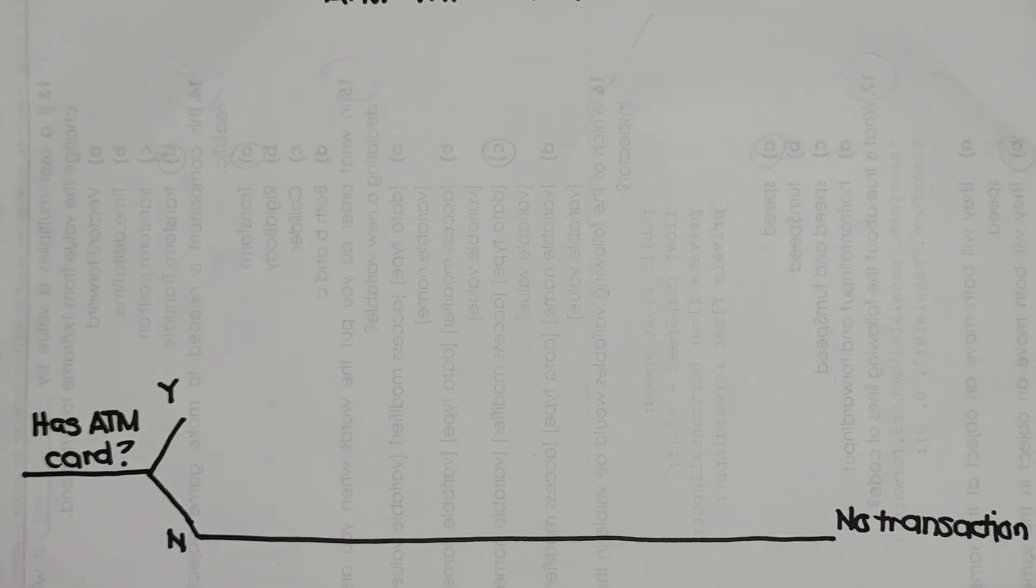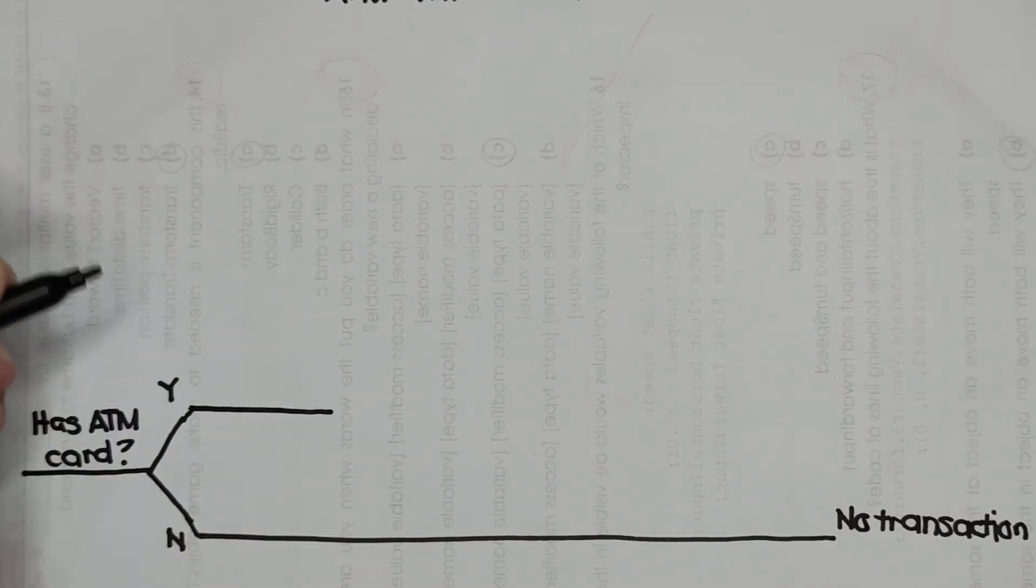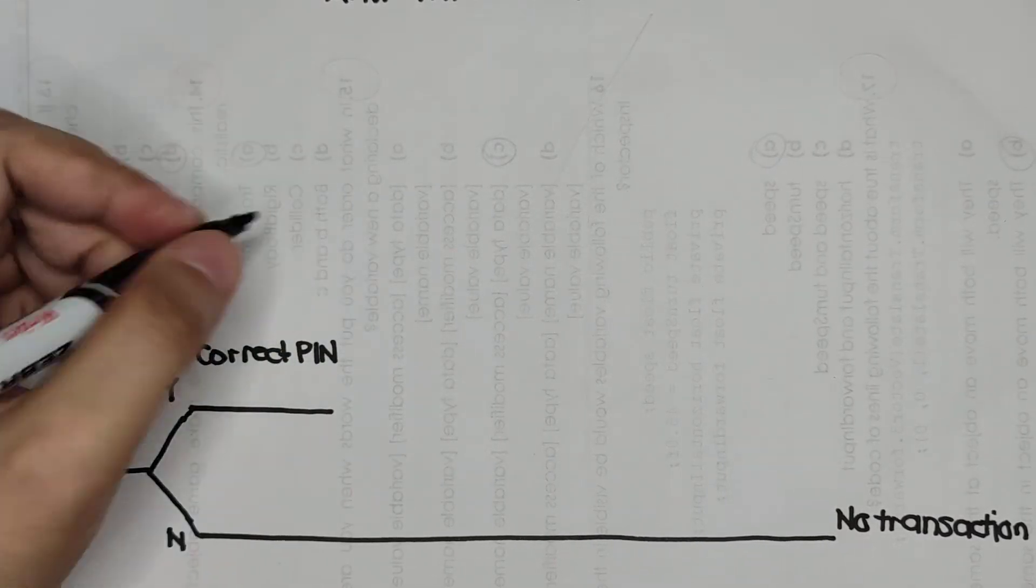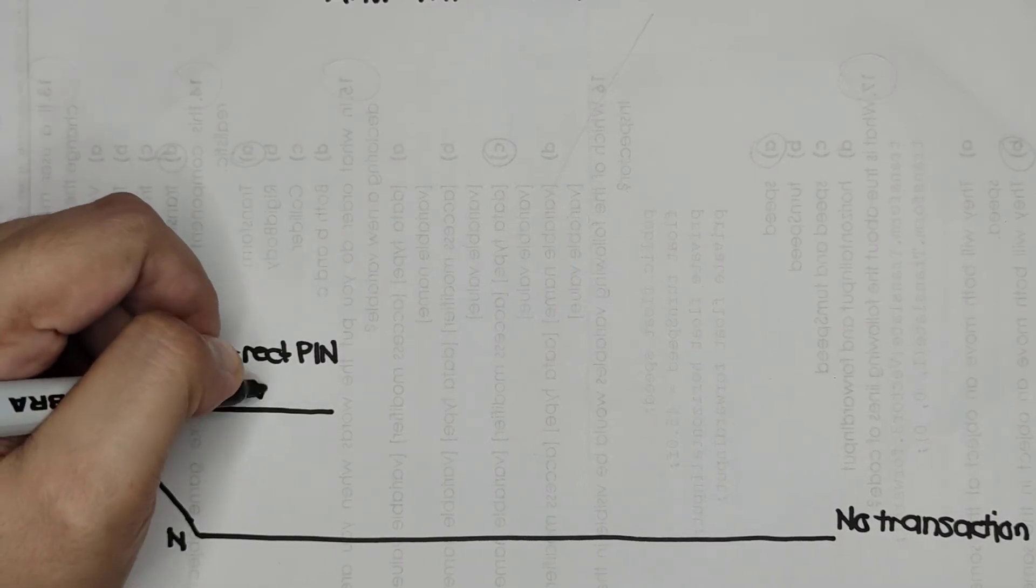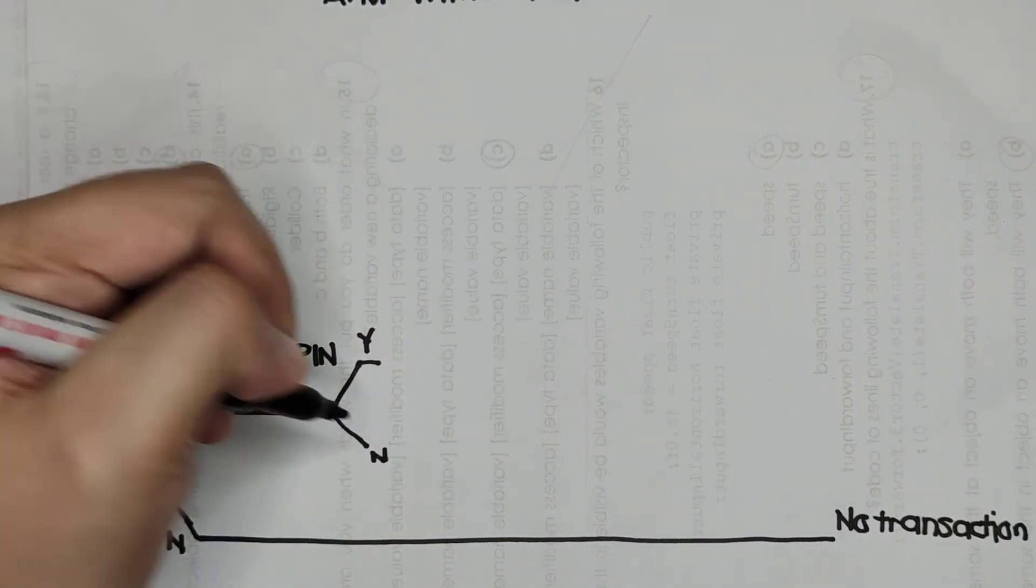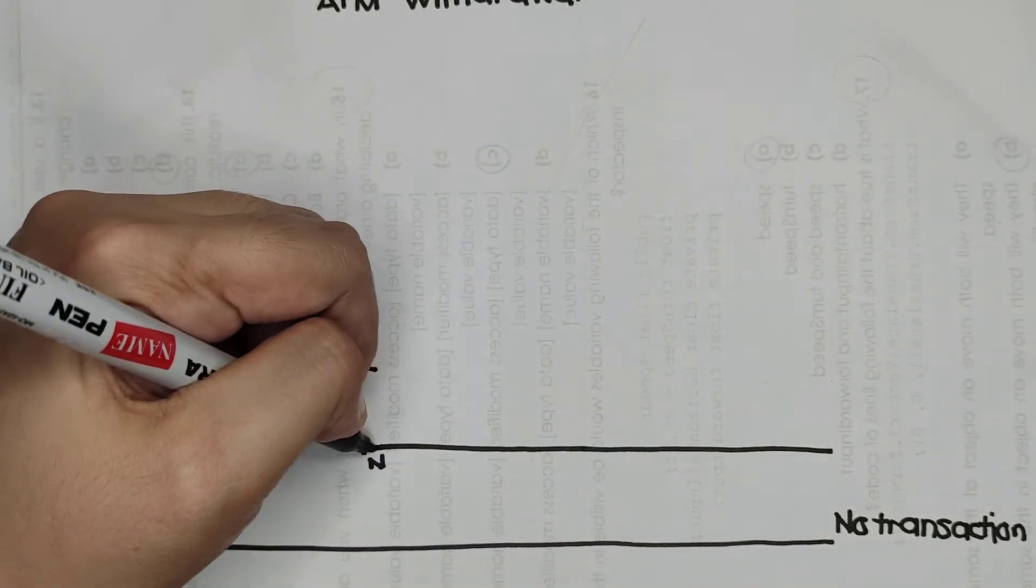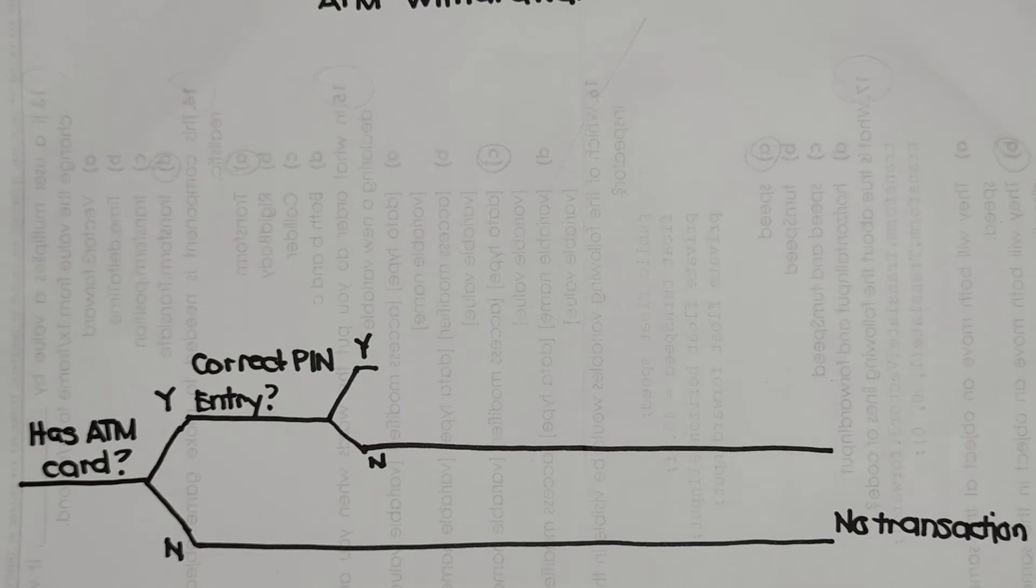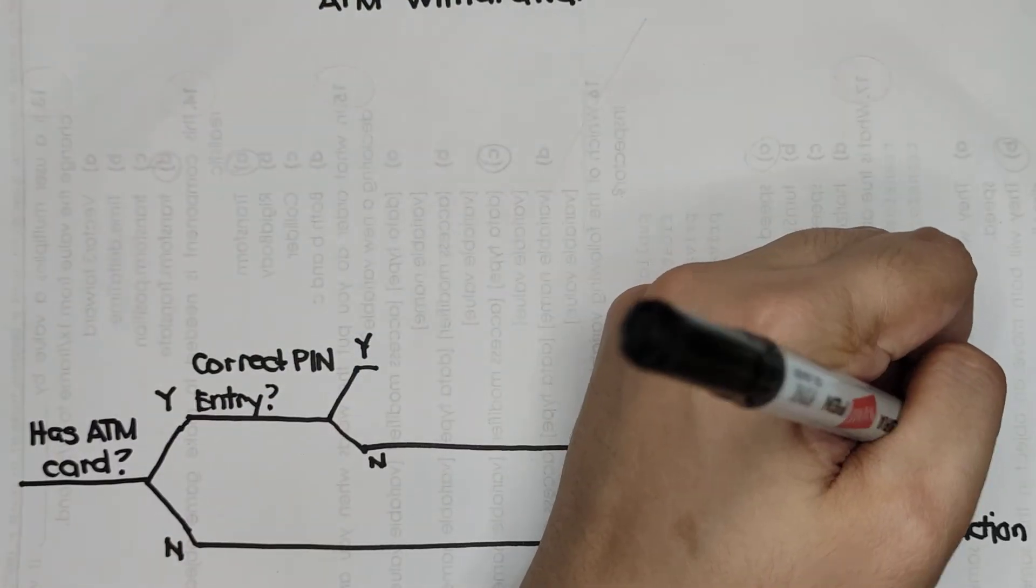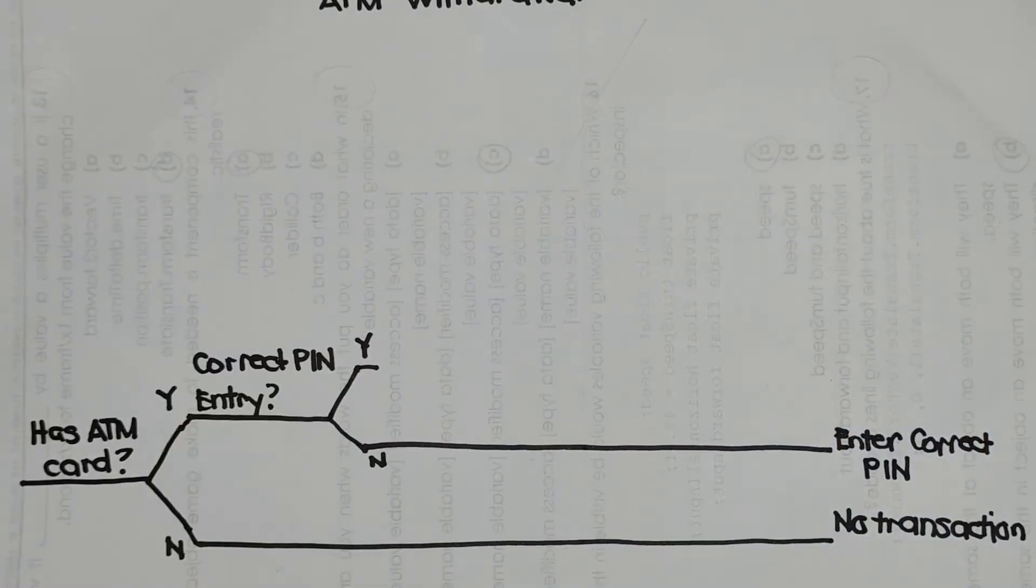Next, for example, you have an ATM card. Yes. Then the next question would be correct PIN entry. Again, it is answerable by yes and a no. Of course, if it is a no, incorrect PIN, we have enter correct PIN. And if it is a yes, we have another question.